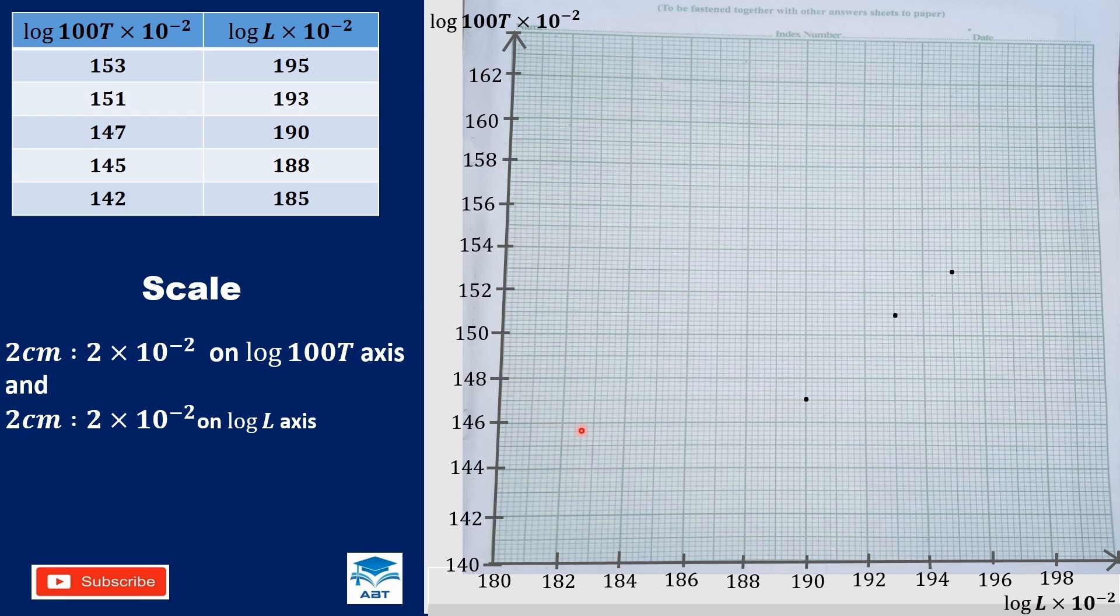The next one, 1, 4, 5 which is between 1, 4, 4 and 1, 4, 6, and then 1, 8, 8 which is here. The next one, 1, 4, 2 and 1, 8, 5.